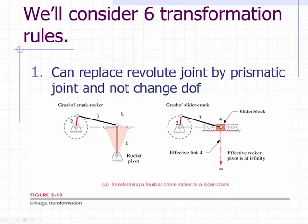Both of these cases have a degree of freedom equal to one because we have four links and four full joints. A full joint here, here, here, here, and here in the Grashof crank rocker. In the Grashof slider crank, we have a full joint here, revolute, revolute, revolute, and prismatic for the slider.